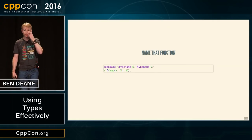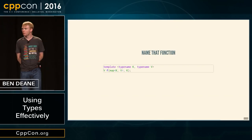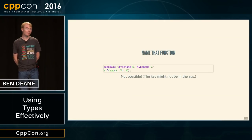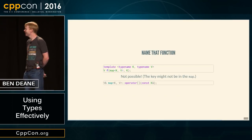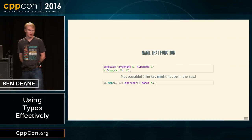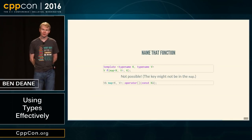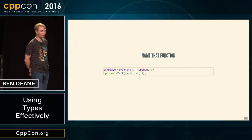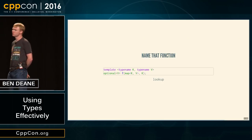How about f(map<K,V>, K) returning V? It's impossible — because the key might not be in the map. But this exists — as operator[], which anyone who's tried to use it on a const map will know. Perhaps if we were writing STL2, we might think about f(map<K,V>, K) returning optional<V>, and call it 'lookup'. We wouldn't have to have things in maps be default constructible, at least not for that.